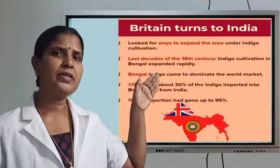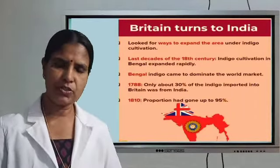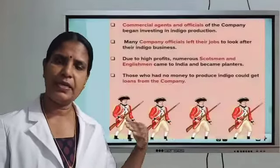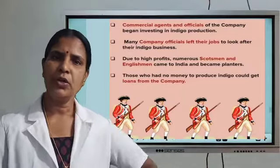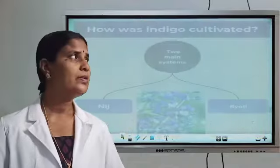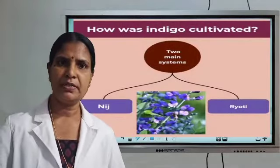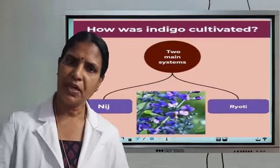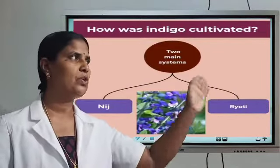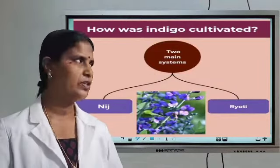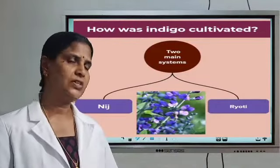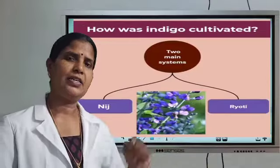They introduced two methods for the cultivation of indigo. What were the two methods of indigo cultivation? First, nij cultivation, and the other method, ryot cultivation. Nij cultivation and ryot cultivation.